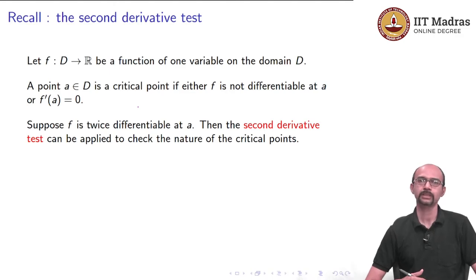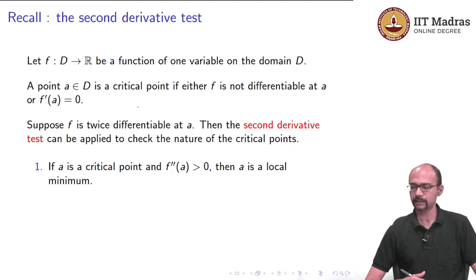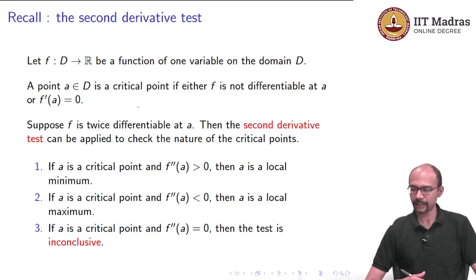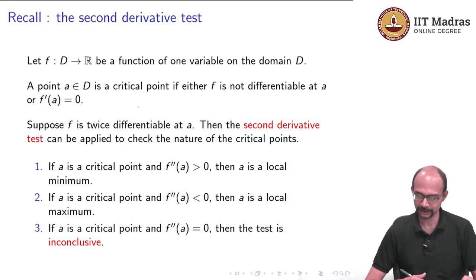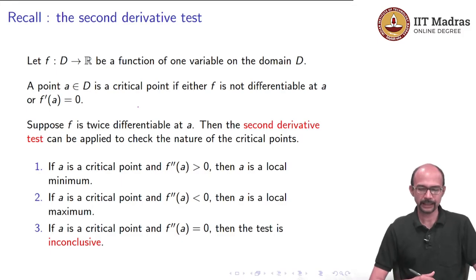The second derivative test tells us the nature of the critical points. If A is a critical point and the second derivative is positive, then this point is a local minimum. If it is a critical point and the second derivative is negative, then it is a local maximum. And if it is a critical point and the second derivative is 0, then the test is inconclusive — we do not know what happens in that case. This was the second derivative test for functions of one variable.